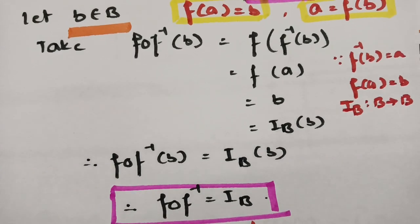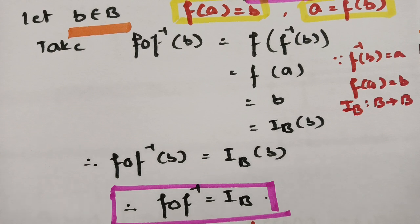Hope you got an idea on this theorem. First, we have to check whether the domains of both functions are equal. Then we select one element from that domain and calculate. Therefore, LHS is equal to RHS — it is the required proof. This is also a very, very most important theorem.